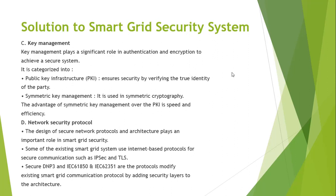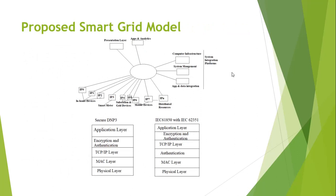The last solution is network security protocols, which are designed to secure the network and play an important role in the smart grid. Some existing smart grid systems use internet-based protocols like IPSec, TLS, and DAS. In a proposed model for the smart grid, the layers can be divided into different IPS zones: separate IPS for mobile devices, for substations and smart grid, and for home services. This can be more efficient and solve cyber security problems in the smart grid system.